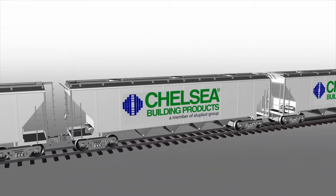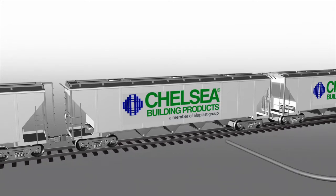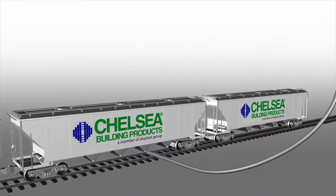Each night, rail cars deliver the PVC resin to the extrusion plant. That material is pumped into large storage silos.